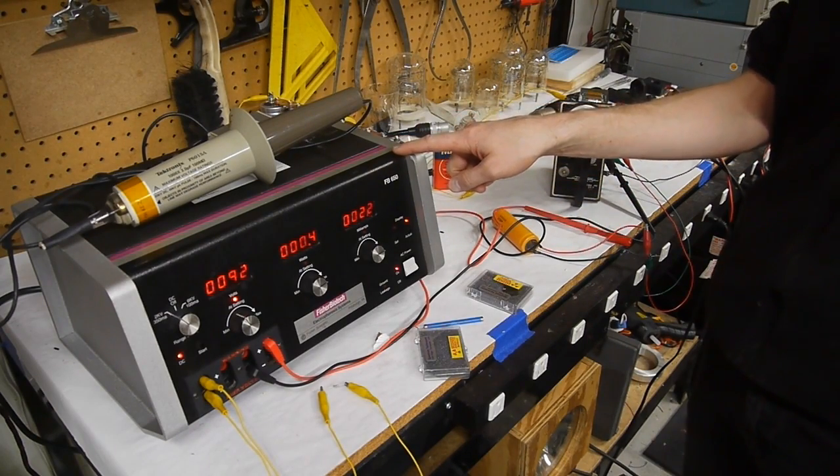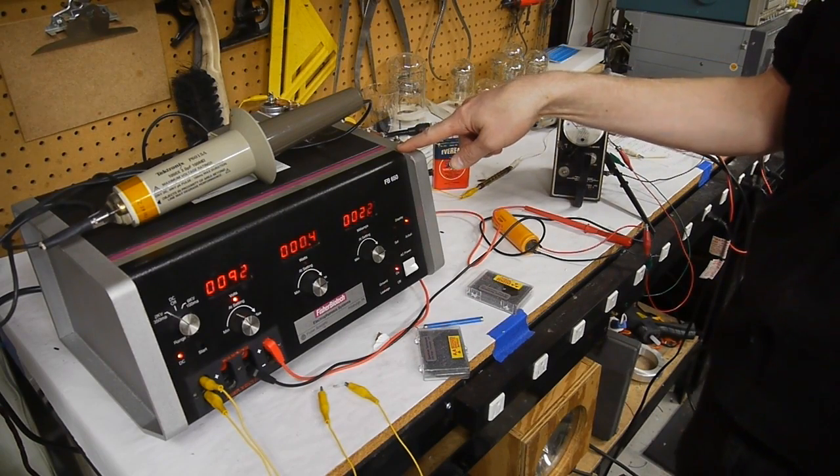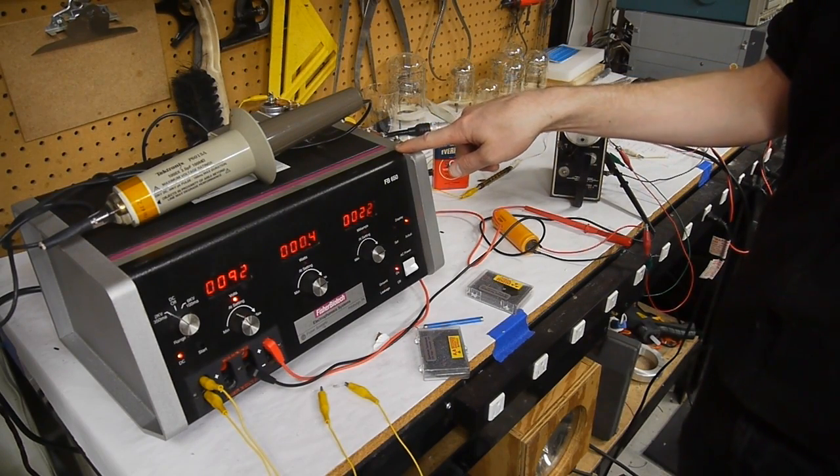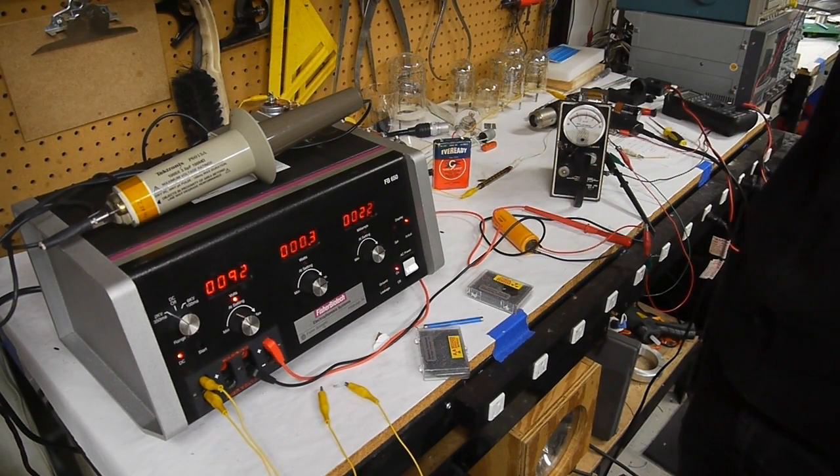This is an electrophoresis power supply that claims it can do 6 kilovolts at 100 milliamps. That's a lot of power at high voltage, so we're going to be hooking this up to some capacitor banks and seeing what we can do with that later.